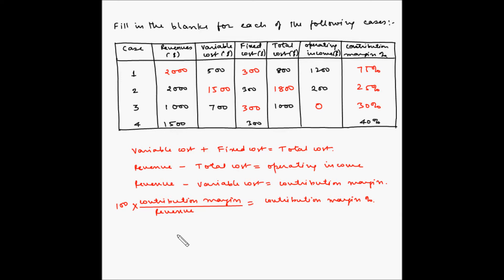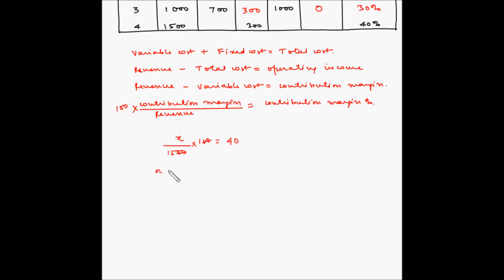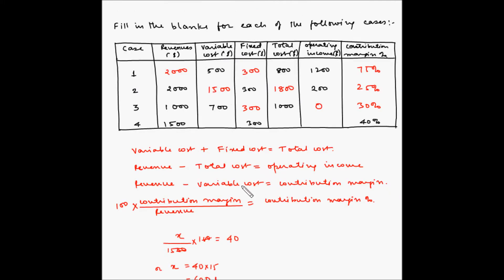The contribution margin is unknown, call it x, and the revenue is 1500. So x divided by 1500, multiplied by 100 equals 40. The two zeros cancel, so x equals 40 multiplied by 15, which is 600 dollars. So the contribution margin is 600.